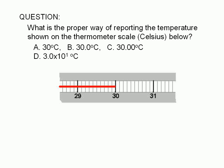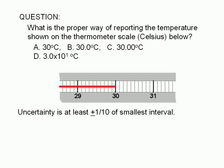The way a measurement is reported should imply the uncertainty in the measurement. For an analog scale, the uncertainty is generally assumed to be at least one-tenth of the smallest interval.